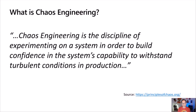The official definition from principles of chaos: chaos engineering is the discipline of experimenting on a system in order to build confidence in its capability to withstand turbulent conditions — and it's targeting production environments. Peter's definition: knocking yourself out by bringing down a server, web app, or any application component already running in production — and it's not just about having fun breaking it down, it's obviously more important to learn from it.